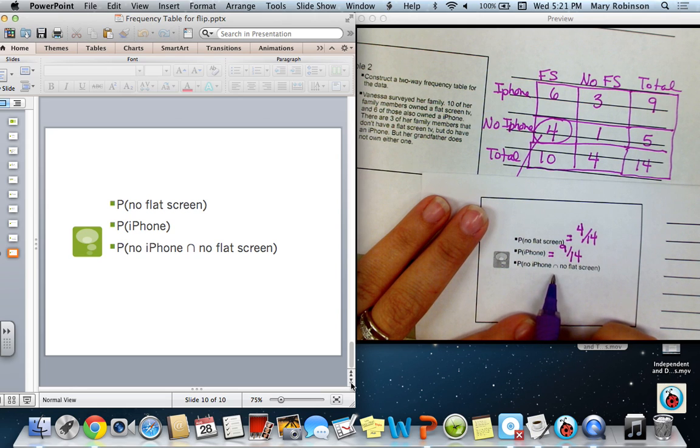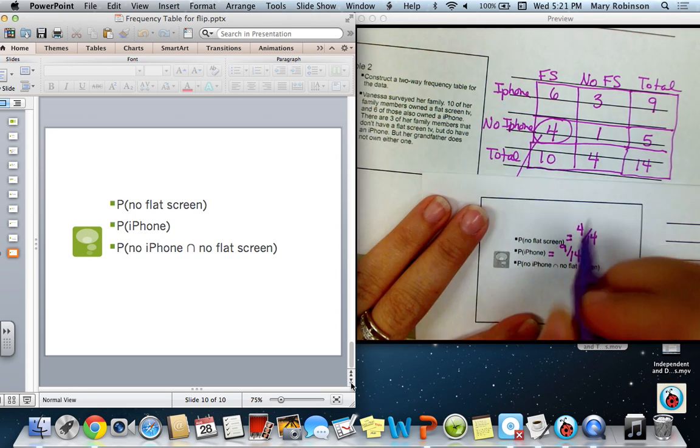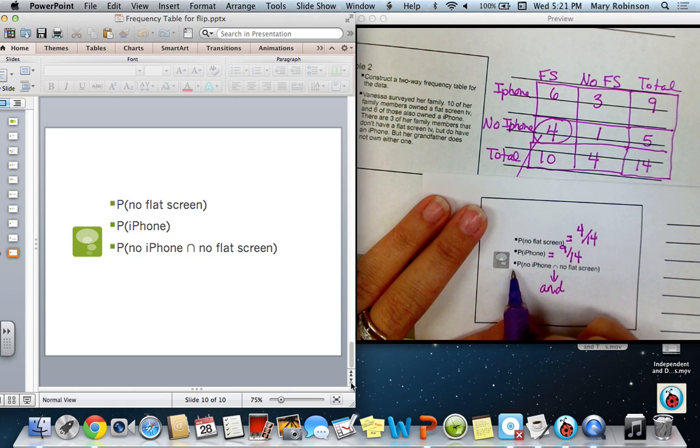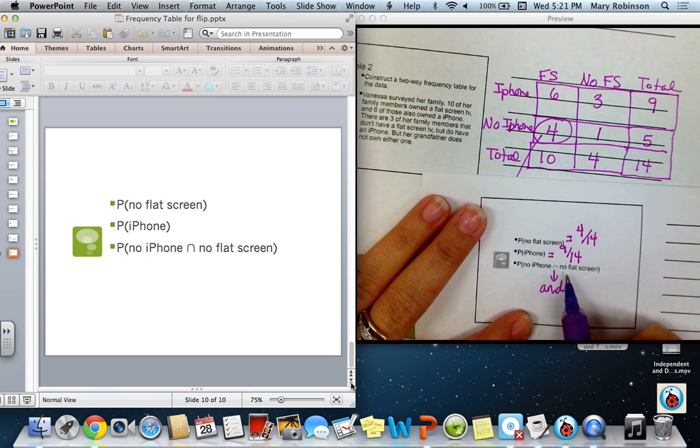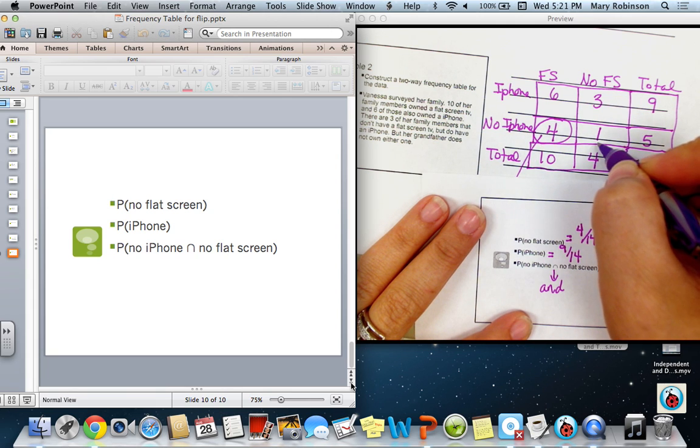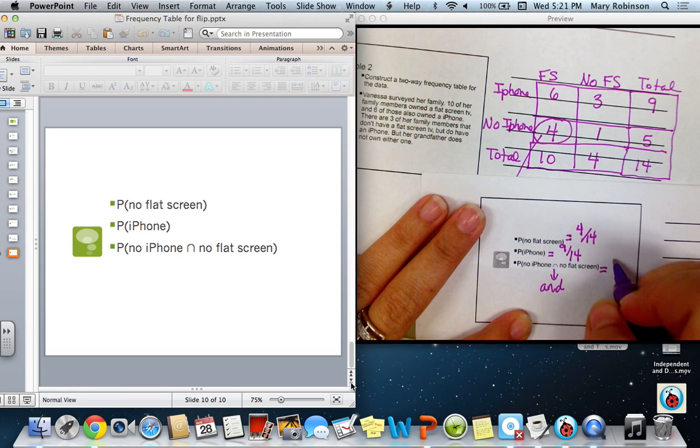So, here's this symbol again, intersection, meaning and. So, the probability that someone does not own an iPhone and does not own a flat-screen, how many did not? That would be one. No flat-screen and no iPhone, so that's Grandpa. So, this probability would be one out of fourteen.